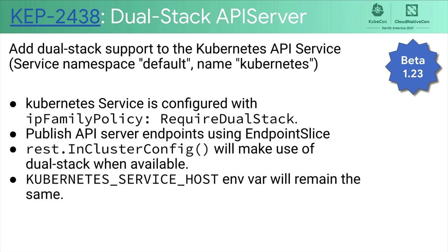As part of the dual stack effort, we are also making the API server service a dual stack enabled service. There are some subtleties to take care of regarding which features need to be enabled without breaking legacy apps. Dual stack API server endpoints will be published using endpoint slice, and the client code will be updated to understand dual stack. However, environment variables such as KUBERNETES_SERVICE_HOST will remain the same to avoid breaking existing applications.